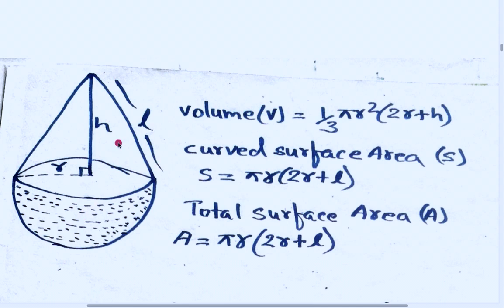Using both figures, the cone and hemisphere are combined into a single figure. This is a problem related to a combined figure. Here h is the height of the cone, r is the radius of the cone, and l is the slant height of the cone. The lower portion is the hemisphere.